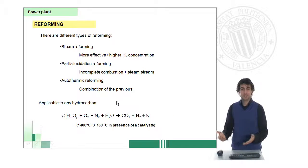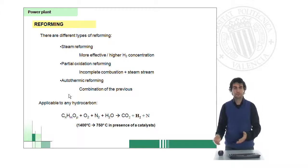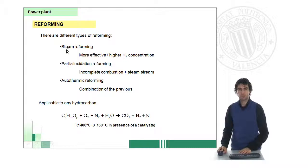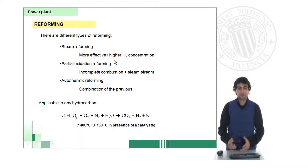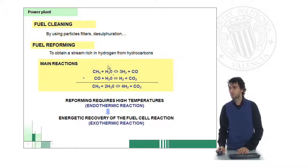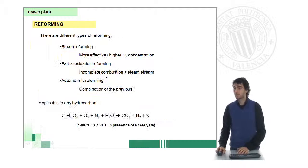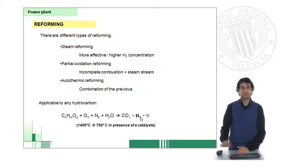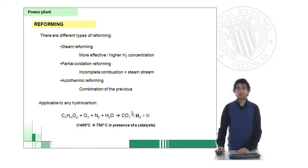There are several types of reforming: steam reforming, partial oxidation reforming, autothermal reforming. But the most important and the most common is steam reforming, which uses a water stream to perform these reactions at high temperature. Indeed, as I said before, we can reform anything, basically any hydrocarbon, by the help of water in order to obtain hydrogen.